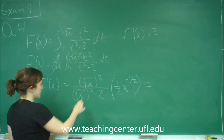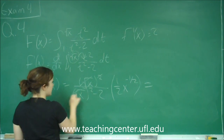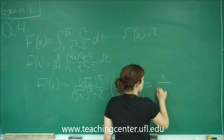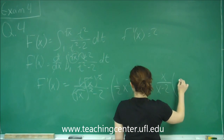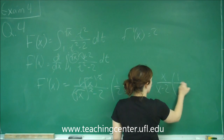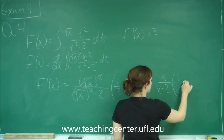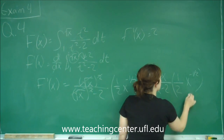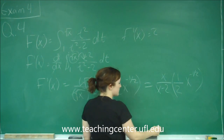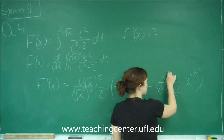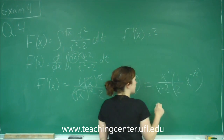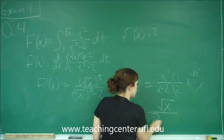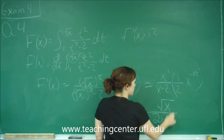So we get here: this becomes just X over X minus 2 times 1 over 2 times X to the negative 1 half. This X to the negative 1 half we're going to multiply by the top. This is X to the 1 when we multiply things with the same base — we add their exponents — so we just get the square root of X on top over 2 times X minus 4.